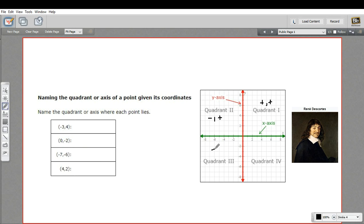In quadrant three, they're both negative. And in quadrant four, the x is positive and the y is negative.